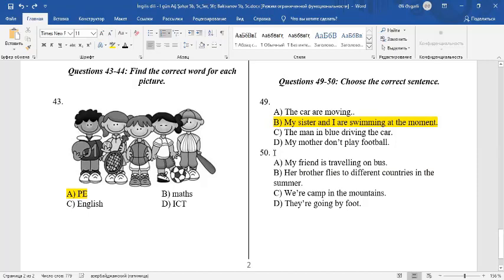50. Choose a correct sentence. My friend is traveling on bus. It's an incorrect sentence. We must say my friend is traveling by bus. B. Her brother flies to different countries in the summer. There is no mistake in this sentence. It is correct. C. We are camp in the mountains. We must say we are camping in the mountains. D. They are going by food. It's an incorrect sentence. We must say they are going on foot.